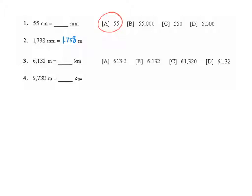Question 3 is 6,132 meters is how many kilometers? Kilo means 1,000, so it takes 1,000 meters to make a kilometer.